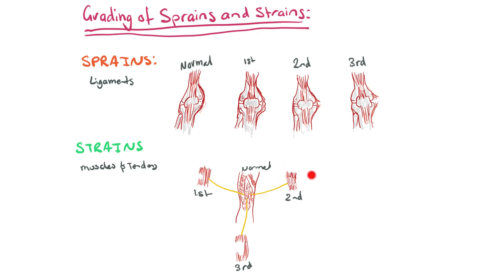A second grade strain is quite a bit more severe — there's tearing and stretching of the muscles, and the muscle fibres have actually started to break down. A third grade strain, like a third grade ligament tear, involves serious tearing and damage to the muscle or tendon, and can also be a complete tear.